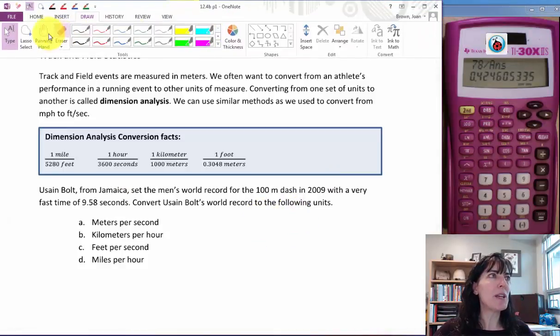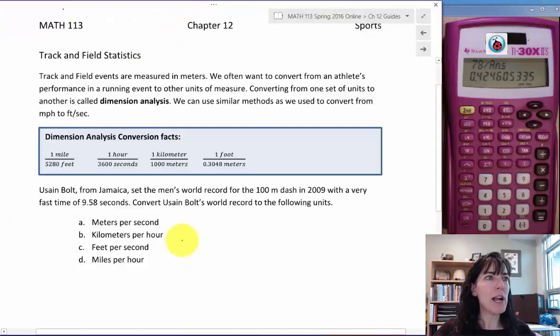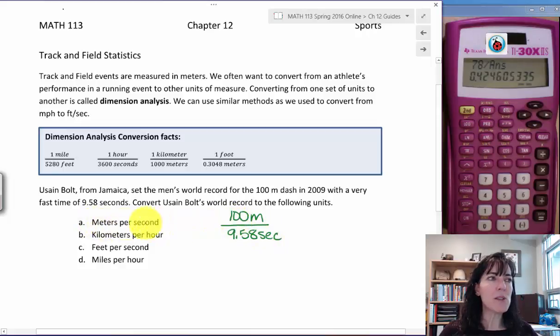or I write his speed as a fraction, it's going to look like 100 meters per 9.58 seconds. Meters per second. That's what we would call that one. And so I'll write it in that order. So that's his speed. And we want to convert it to what is it in meters per second? Well, our units are already correct meters over seconds. And that's what we're being asked for.